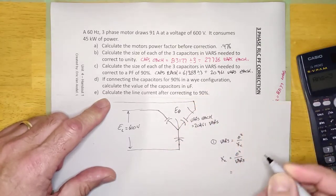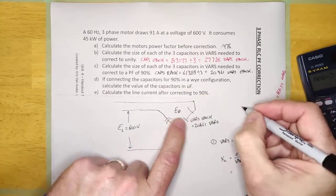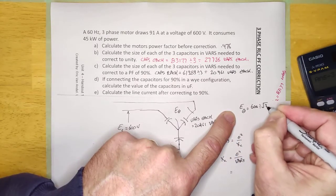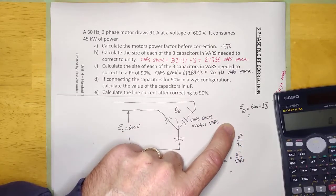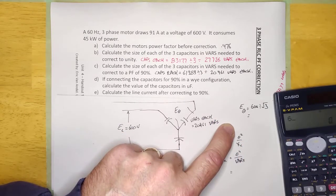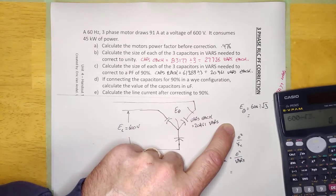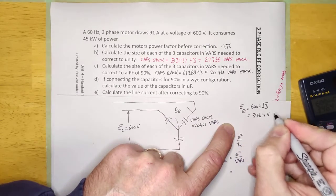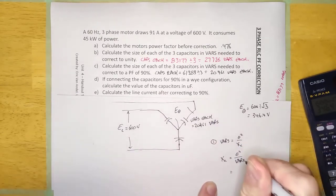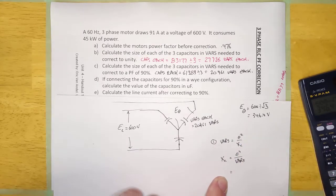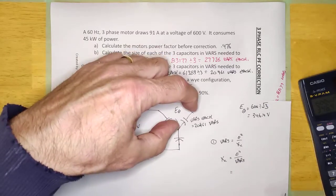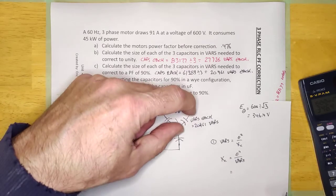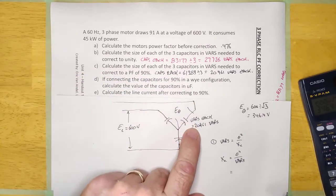And so, what I have to do first is calculate E phase for this calculator. And it's going to be 600 divided by root 3. And so, it's going to be 346.4 volts. And that is the voltage that I need to use here. Because XC is going to be the voltage dropping across the capacitor divided by the VARs of the capacitor. The voltage dropping across the capacitor is squared, divided by the VARs of the capacitor.